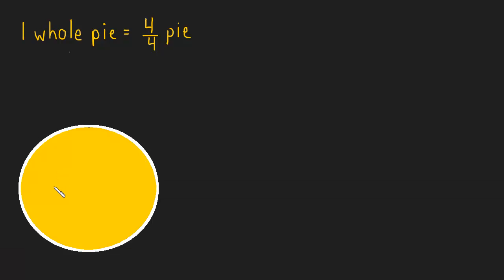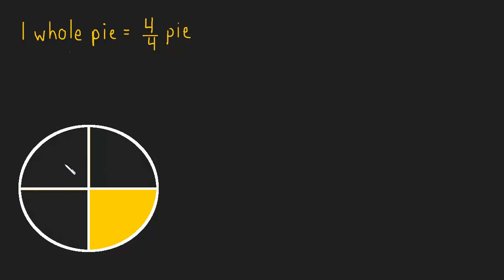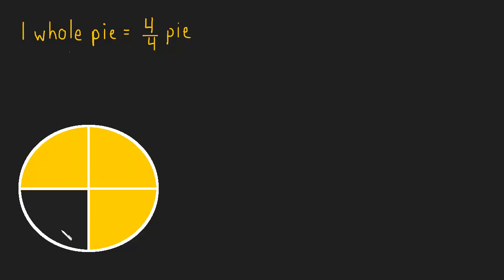So here's a whole pie. Oops, sorry about that. Fill that in. That's the same thing as having all four pieces of this pie. So here's the whole pie. Here's four out of four pieces of pie. It's the same. You have the same amount of pie.